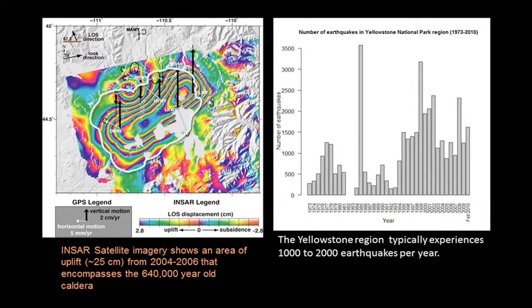In today's environment, we have very high-precision instruments — satellites — that can measure various things in real time. What you're looking at here is called InSAR satellite data. What this measures is ground deformation as it's happening, using radar. This is the caldera rim of the 640,000-year-old caldera, and all these lines represent uplift that's occurred. Over a two-year period, the entire floor of that caldera rose about two feet. That's quite a lot of rapid uplift. But as it turns out, the interesting thing about the caldera is it actually almost acts like an organism — it kind of rises and falls, just like it's breathing.